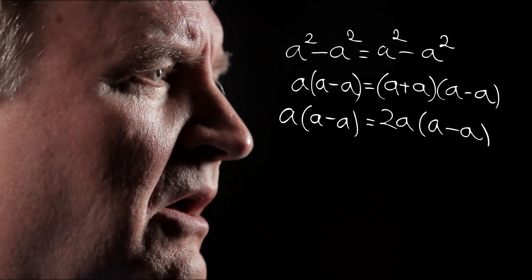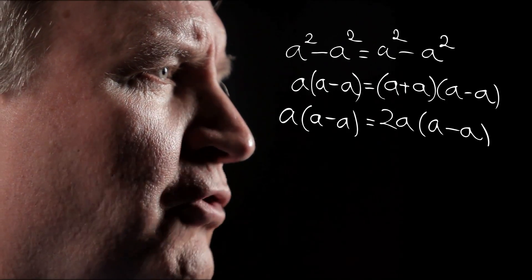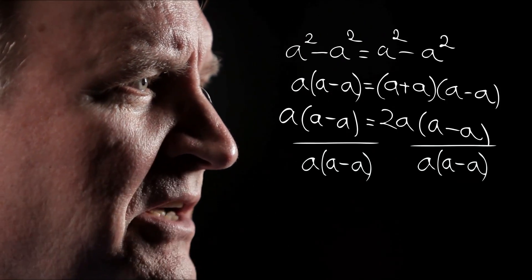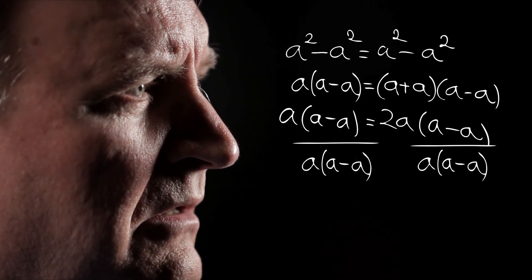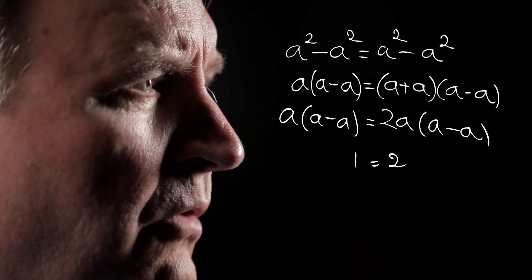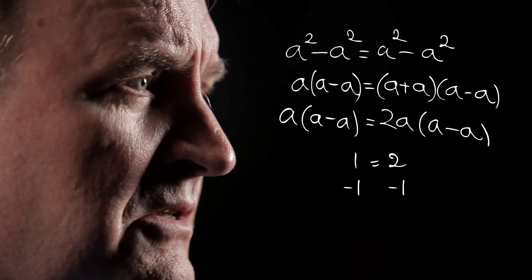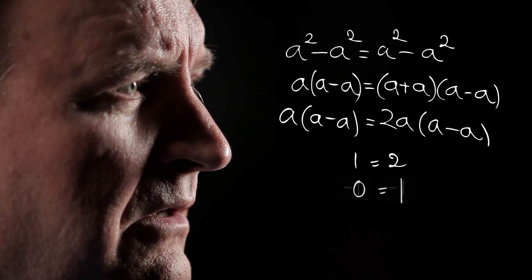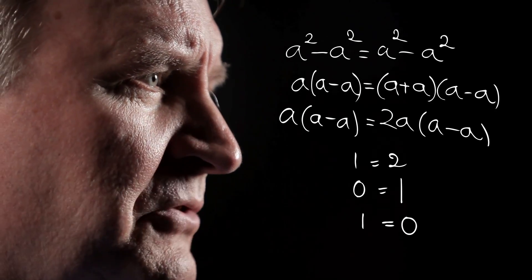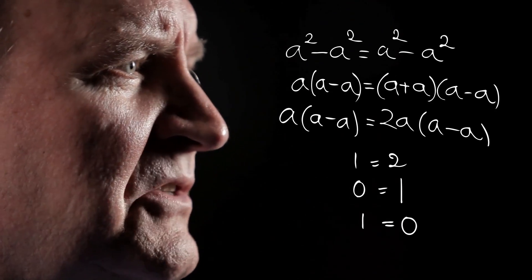Students are always told to simplify mathematical expressions as much as possible — for example, by dividing through common factors. Applying this principle, we divide by the common factor a times (a minus a) and obtain 1 is equal to 2. Simplifying further by subtracting 1 from both sides, thus 0 is equal to 1, or by symmetry, 1 is equal to 0.